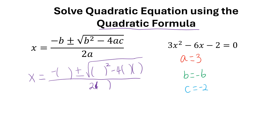Now I'm going to put each one of those numbers into the placeholder from the formula. So we have negative b — b is negative 6 — plus or minus square root of b squared, so that's negative 6 squared, minus 4 times a, a is 3, times c, that's negative 2, and then all over 2 times a, which is 3.